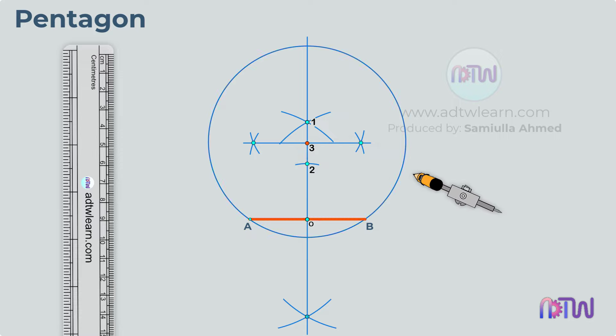Take this length AB on the compass and cut arcs on the circumference of the circle to determine the other points required for the pentagon.